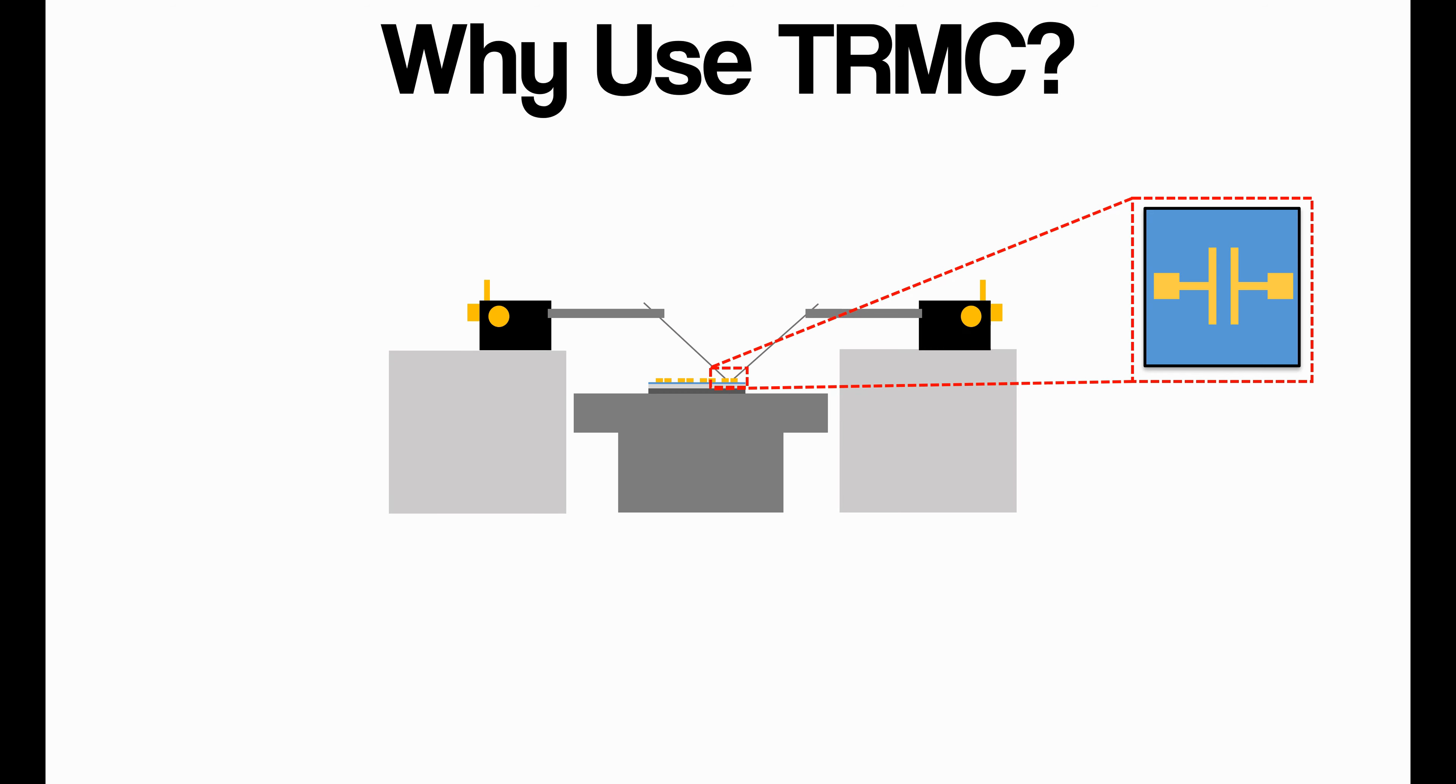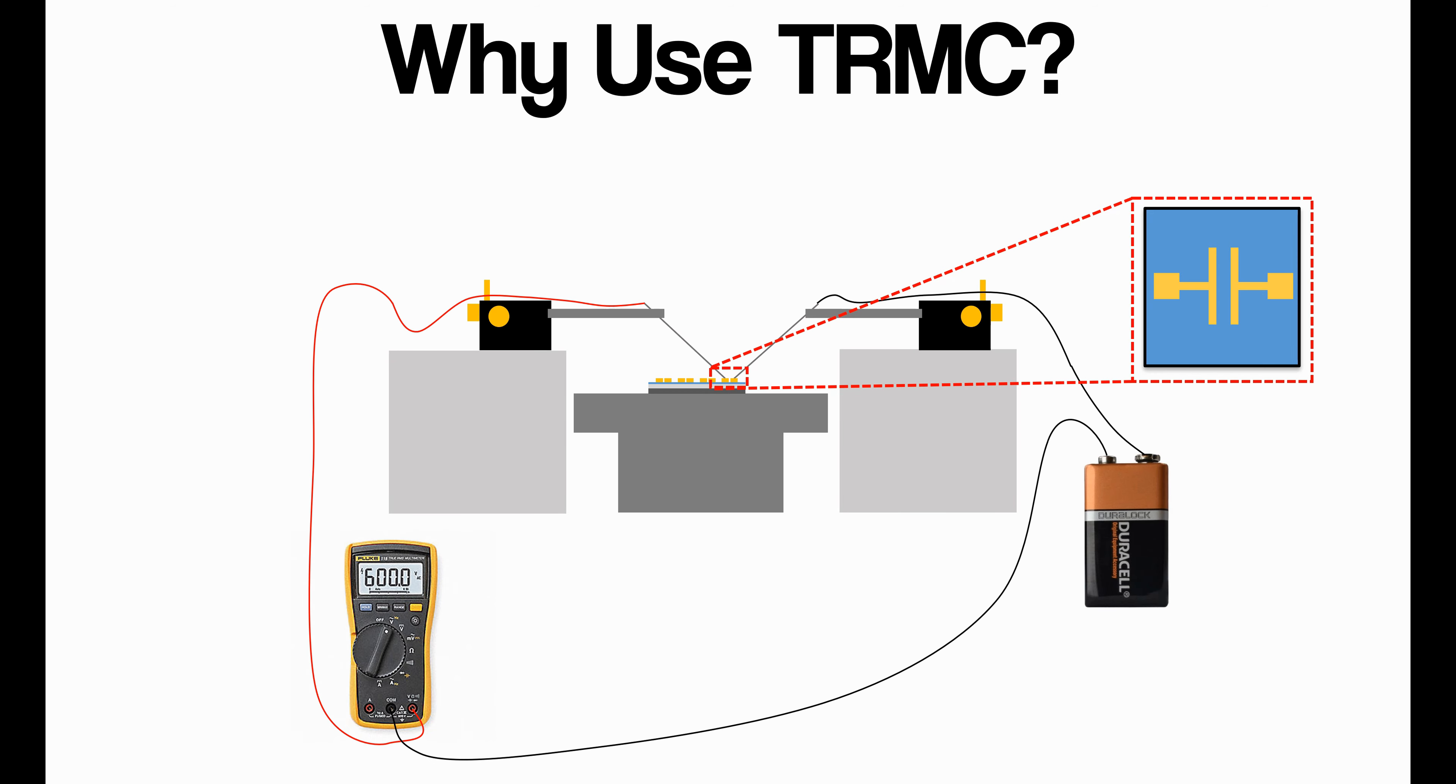But why could you not just do this via conventional methods? Well, you can. You could take your material, whatever it happens to be, let's say it's this blue material here, attach some electrodes, which in this case are gold, and then we have an experimental setup. We put it in place and then we connect some conducting needles to these electrodes and then essentially apply voltage and see how much current flows. It's a very simple measurement.